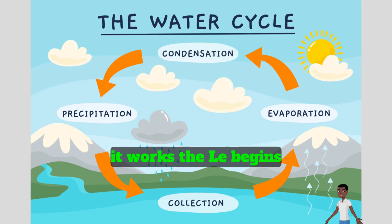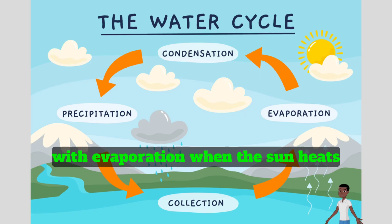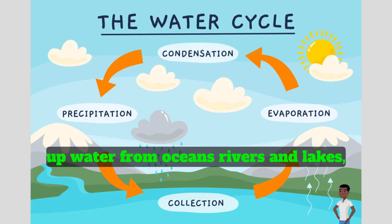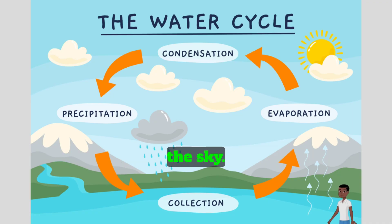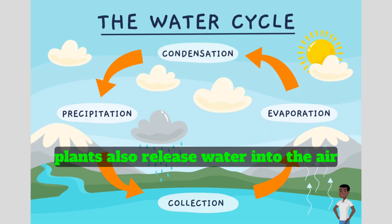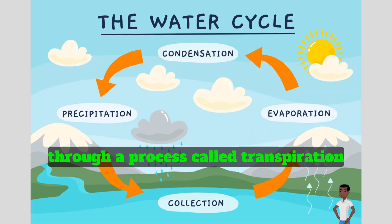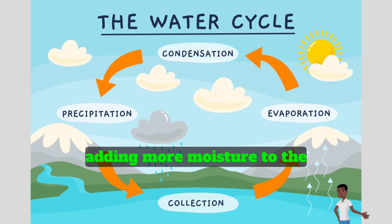The cycle begins with evaporation. When the sun heats up water from oceans, rivers, and lakes, it turns into water vapor and rises into the sky. Plants also release water into the air through a process called transpiration, adding more moisture to the atmosphere.